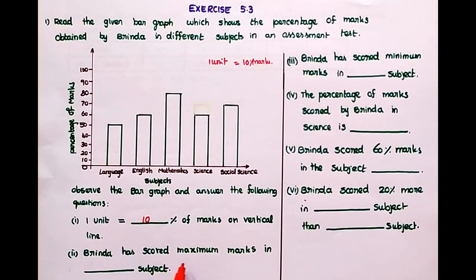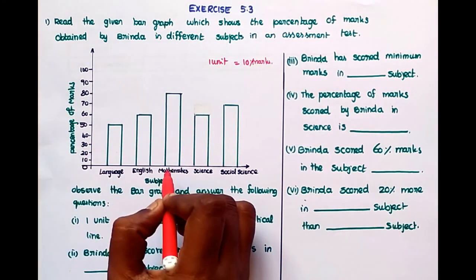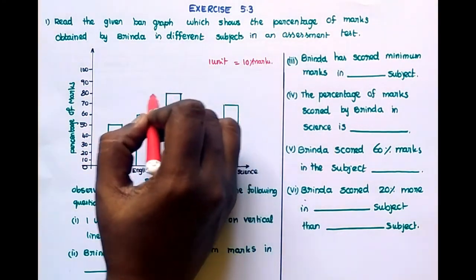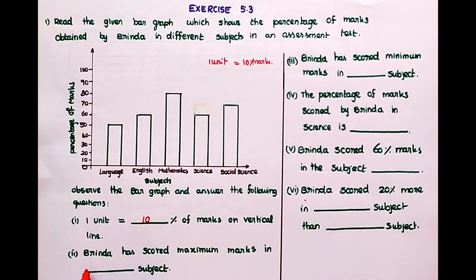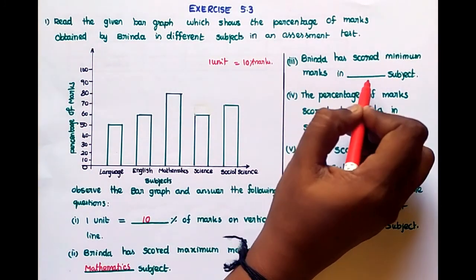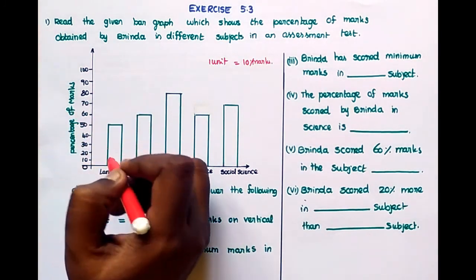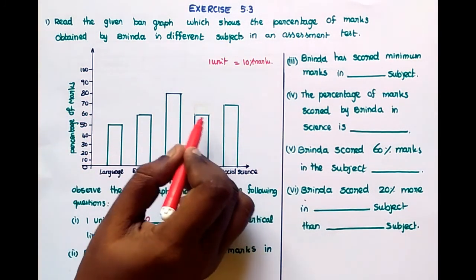Next, Vrinda has scored maximum marks in dash subject. Which subject did Vrinda score highest marks? Here, mathematics. Vrinda has scored minimum marks in dash subject. In which subject did Vrinda score least marks? That is language.